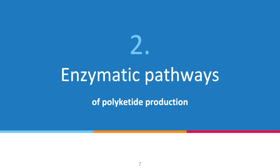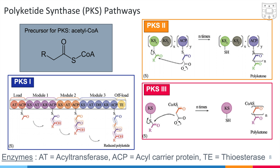Next, we will talk about the enzymatic pathways used for polyketide production. Naturally, there are three polyketide synthesis pathways known as type 1, type 2, and type 3. All of them start with acetyl-CoA as their monomer unit. In the diagrams, the colored circles are protein subunits, and the letters stand for what the subunit does, such as AT for acetyltransferases. Type 1 are very complex multi-unit proteins with multiple modules that add the acetyl-CoA monomers and then further react them to make the final polyketide product.